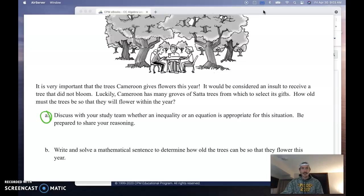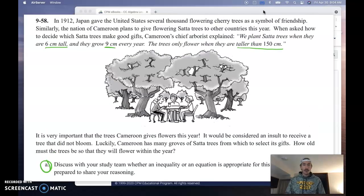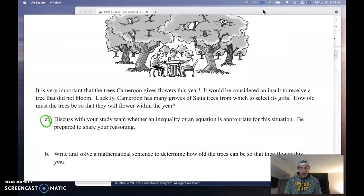It is very important that the trees Cameroon gives flower this year. It would be considered an insult to receive a tree that did not bloom. How old must the trees be so that they will flower within a year? Part A says discuss whether an inequality or an equation is appropriate for this situation. I'm going to invite you to look back at the words taller than. It does not say equal to. It doesn't say when it is 150 centimeters. Those are like definite equal to values. I don't have that here. It says taller than. What if it's 151? That's taller than 150. What if it's 160? That's taller than 150. So what we're seeing is a situation where we have many possible options that would satisfy this. So because this is the case, an inequality is going to be appropriate.